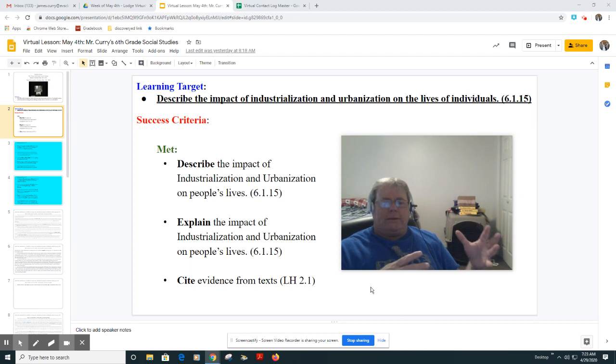What does industrialization and urbanization's impact look like on people's lives? You're going to explain the impact. I might say people were able to drive cars because Henry Ford created the assembly line and put out Model A, Model B, Model C - used the whole alphabet cars.